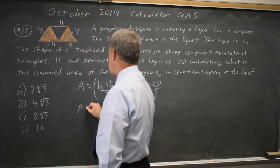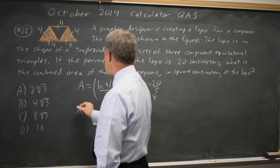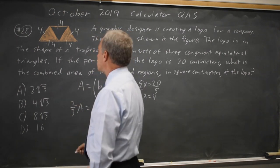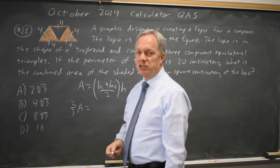So the area of the entire trapezoid is the average of the base times the height. And 2 thirds of the area, which is the shaded region, since we have three equilateral triangles and only two are shaded.